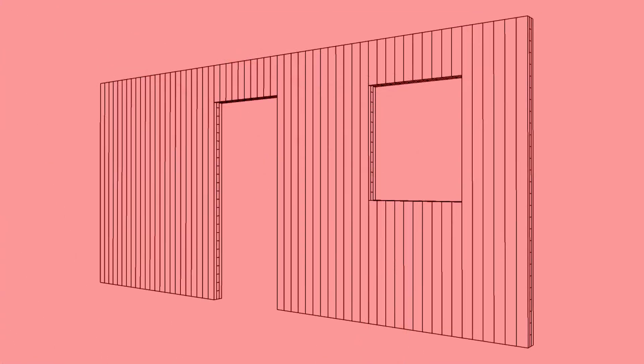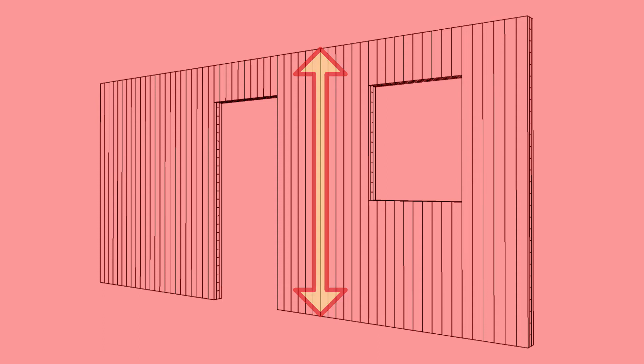The direction of the outer laminations is important to the way the panel will be used. For walls, the outer layers should be vertical, or transverse. For floors and ceilings, the opposite, longitudinal, orientation is used.